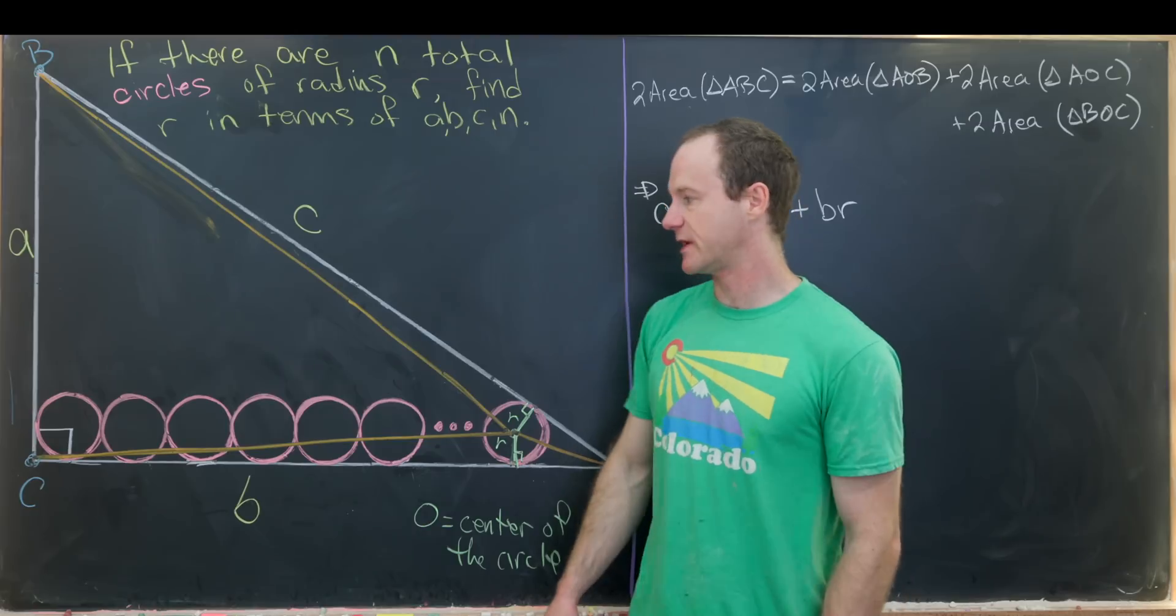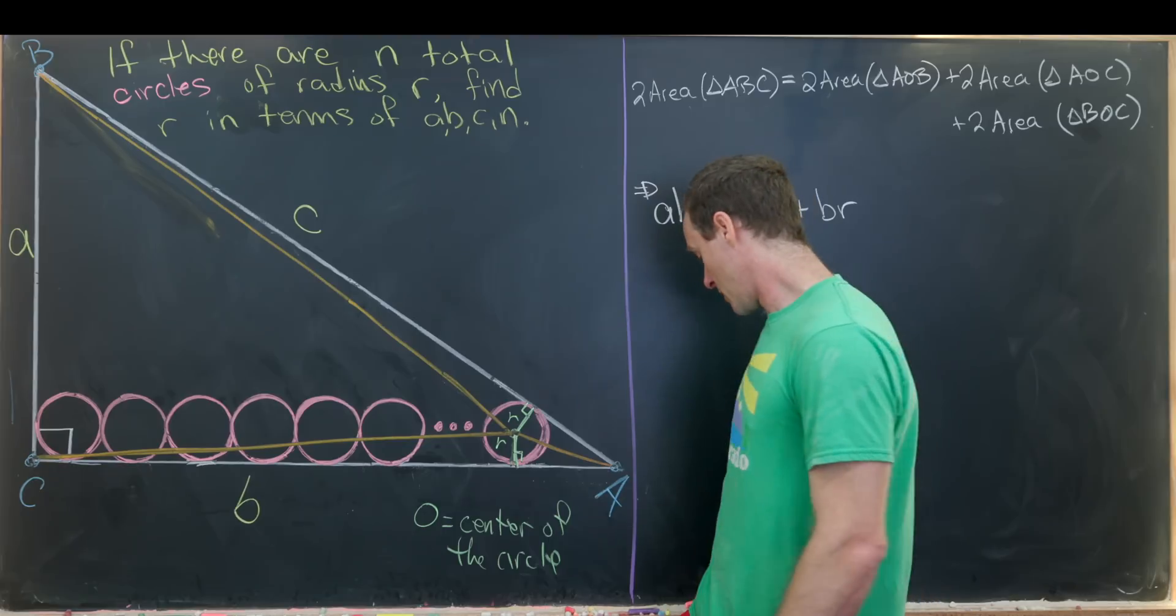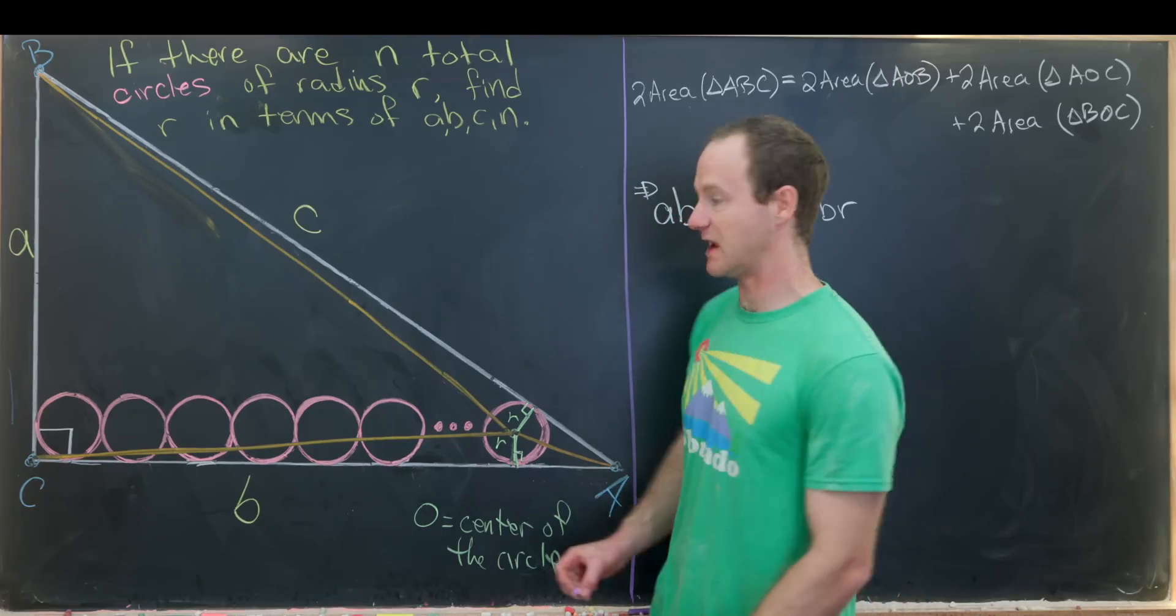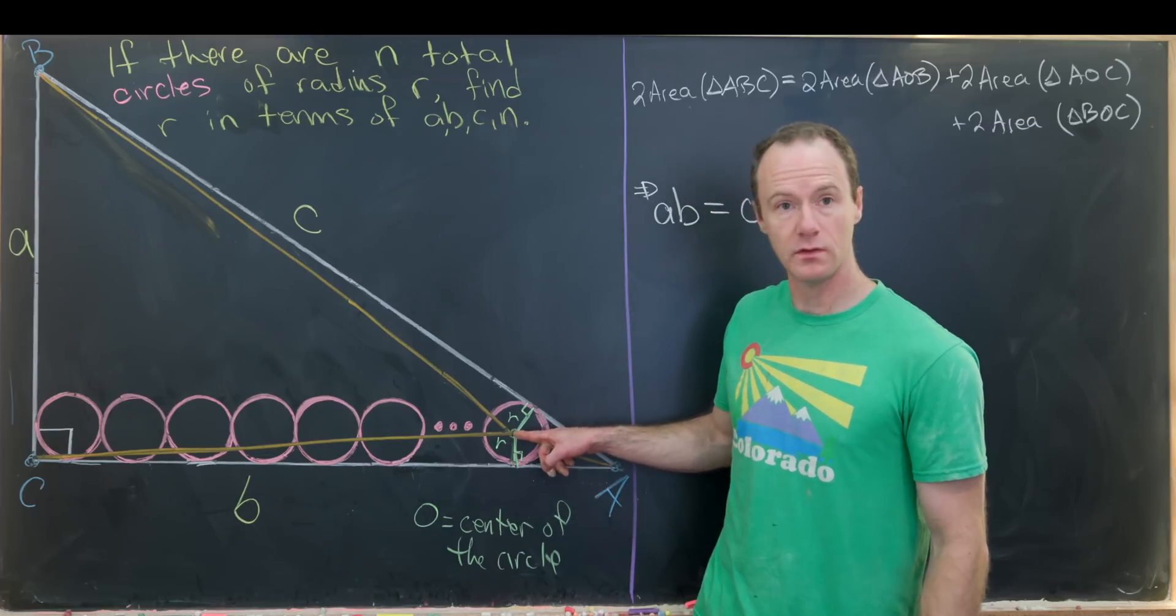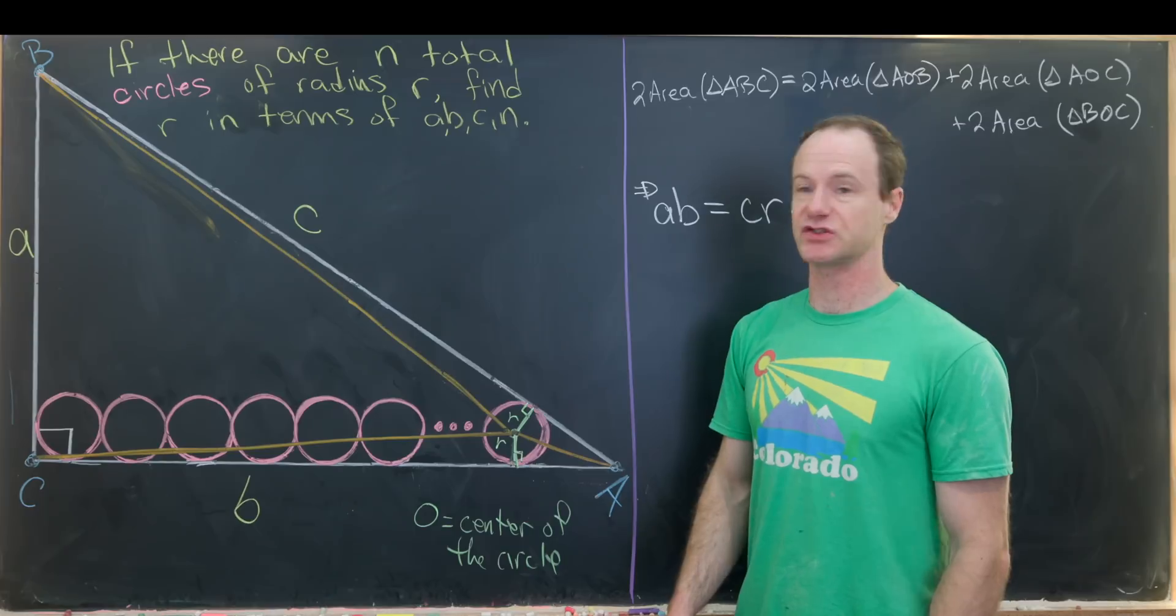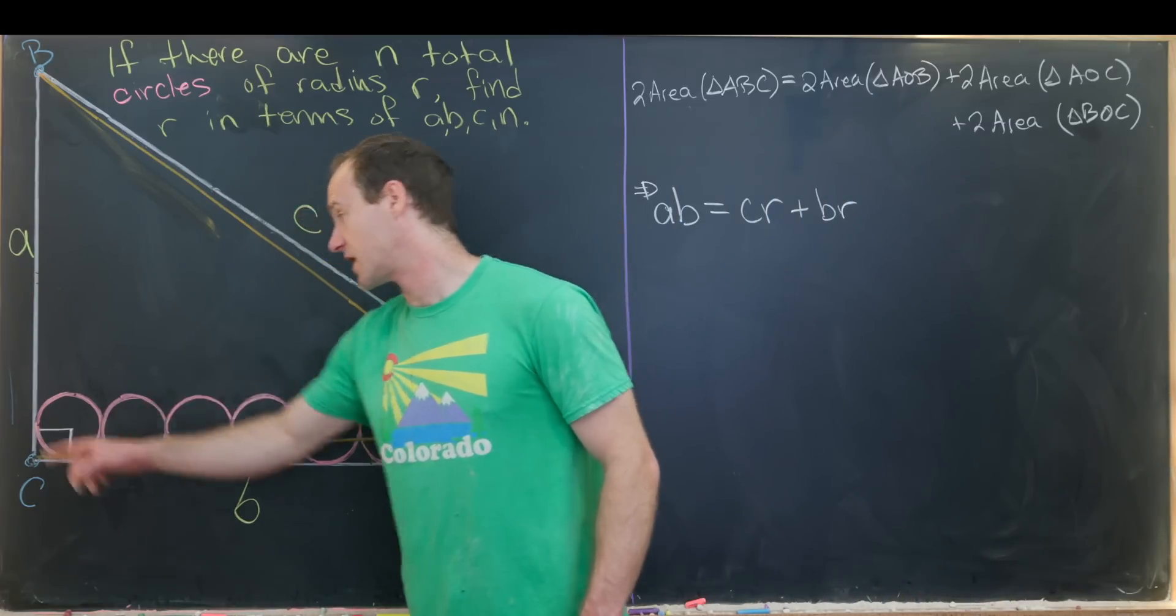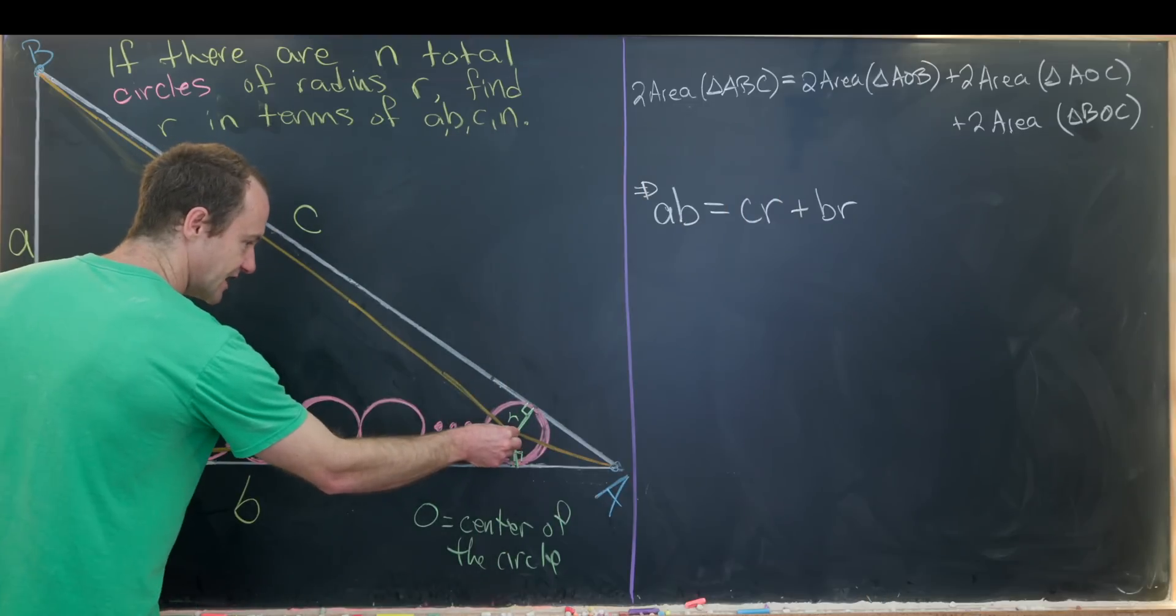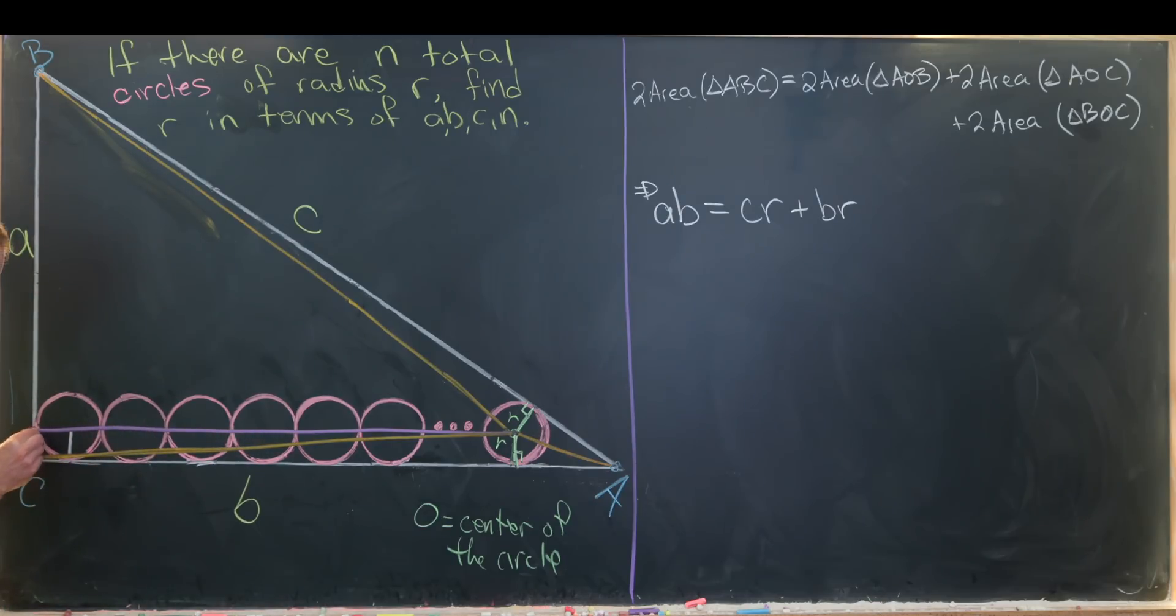Now this last one is a little bit trickier because we don't have any right angles built in immediately. But we can add a right angle by connecting this point O with line segment BC through the center of all of these circles. Since it goes through the center of all of these circles, it will intersect at a right angle because this circle is tangent to this line segment.